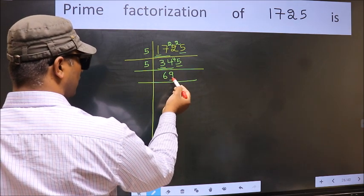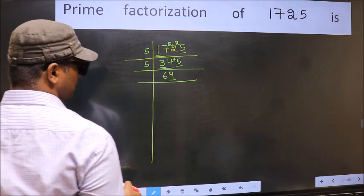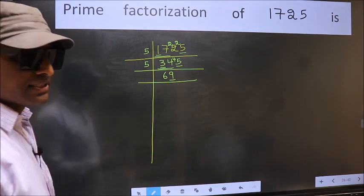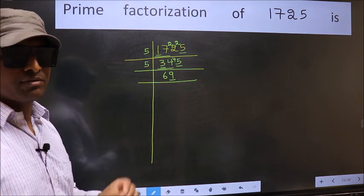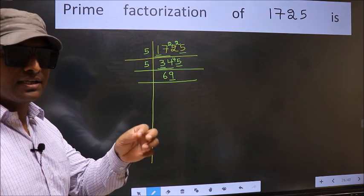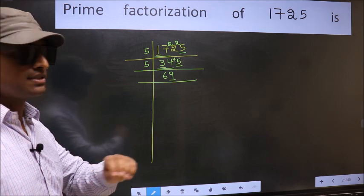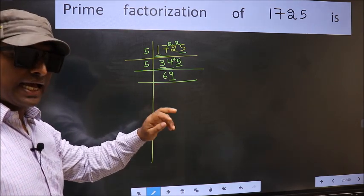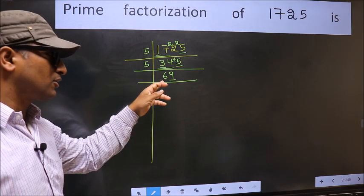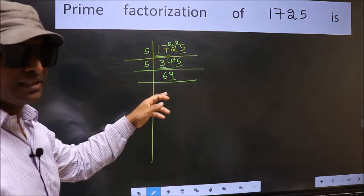Now the last digit 9, not a 1, so this is not divisible by 2. Next prime number 3. To check divisibility by 3, for that we should add the digits. What I mean is, 6 plus 9, 15 and 15 is divisible by 3. So this number also divisible by 3.